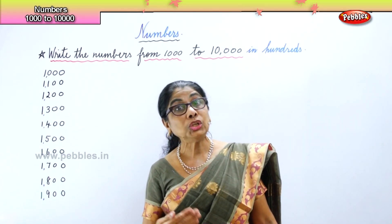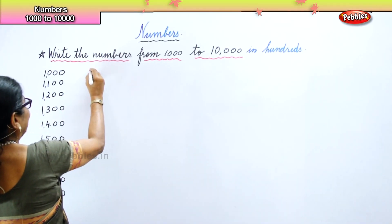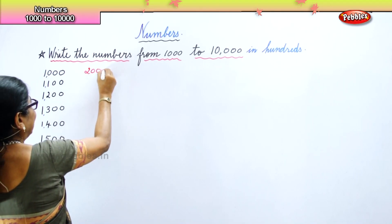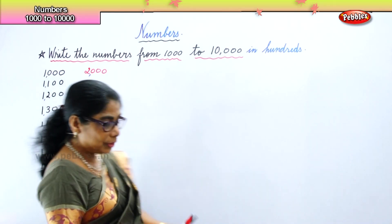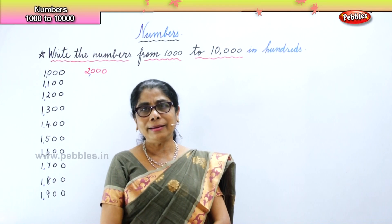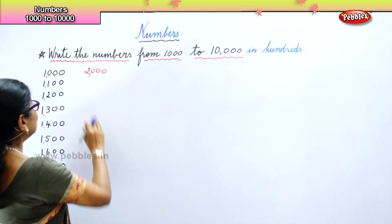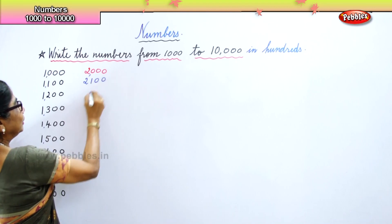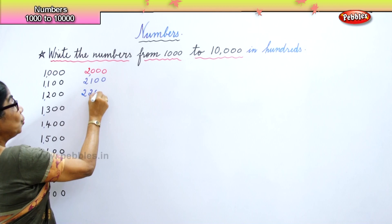Next, that will be 2,000. You write 2,000 here. You put a tiny little comma to differentiate the hundreds from the thousands. What is next? Continue: 2,000 one hundred. Very good. Next: 2,000 two hundred.